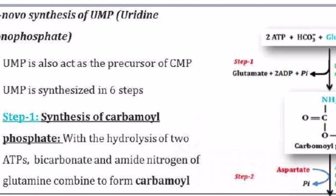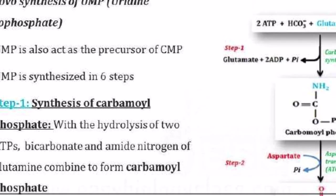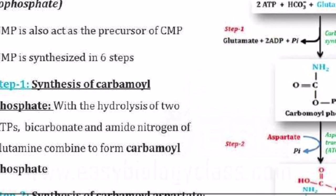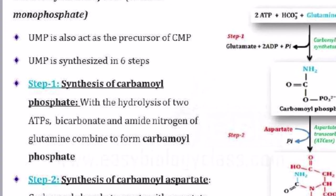The first step is the synthesis of carbamoyl phosphate. Two ATPs are involved in this step along with glutamine. Bicarbonate ions are combined with the amide nitrogen of glutamine. Glutamine is converted into glutamate, and the two ATP molecules release their phosphate groups. With the help of the enzyme carbamoyl phosphate synthetase 2, this converts into carbamoyl phosphate.